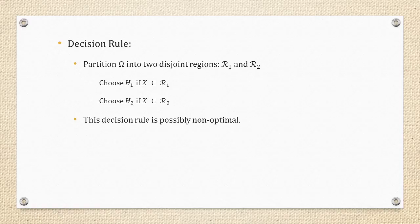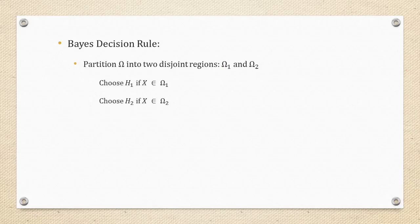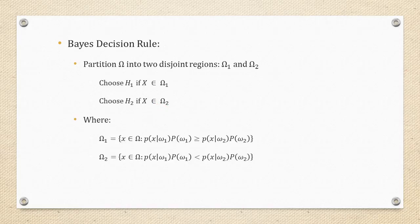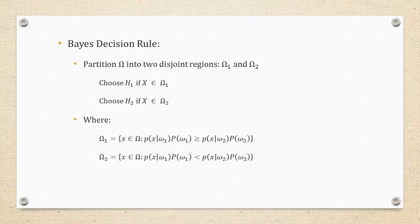Just to emphasize: this arbitrary decision rule is possibly non-optimal — it may be optimal, but it's just some decision rule. Compare that with the Bayes decision rule, where we use sets omega 1 and omega 2 instead of region 1 and region 2. We choose hypothesis 1 if x is in set omega 1 and hypothesis 2 if x is in set omega 2. Set omega 1 is precisely defined by the Bayes condition — those members x in omega where the weighted probability statement holds.